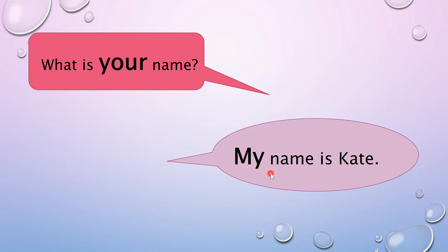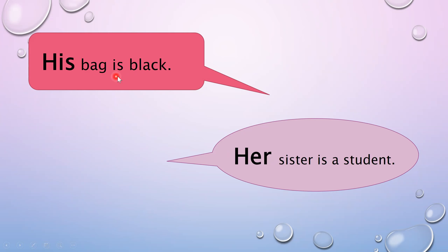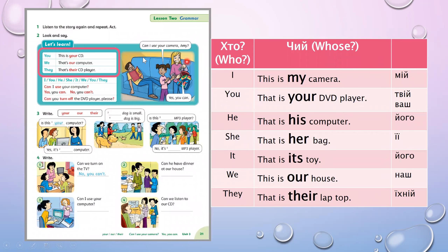We've met these words many times. Another slide: 'His bag is black' — his bag — його портфель, його сумка. 'Her sister is a student' — her sister — її сестра. Possessive pronouns: his — його, her — її.